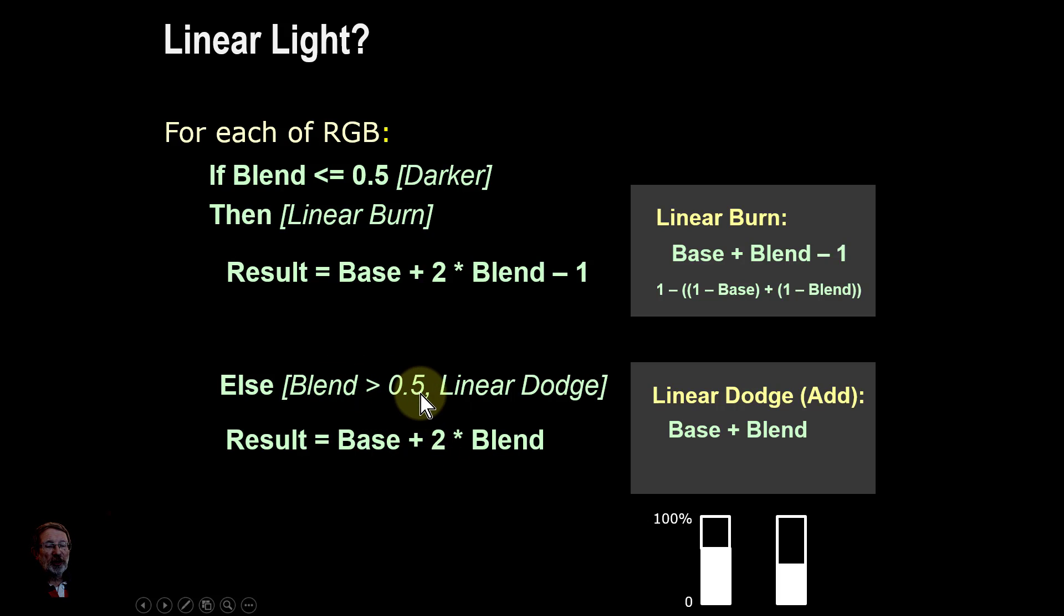However, the problem that happens with this, the blend is greater than 0.5. So two times it, it means it's going to be one, which is maximum. So add anything to maximum, it's still going to be the maximum. So it's all going to be one. So we need to do something about this. And this is the problem that caused me somewhat confusion.